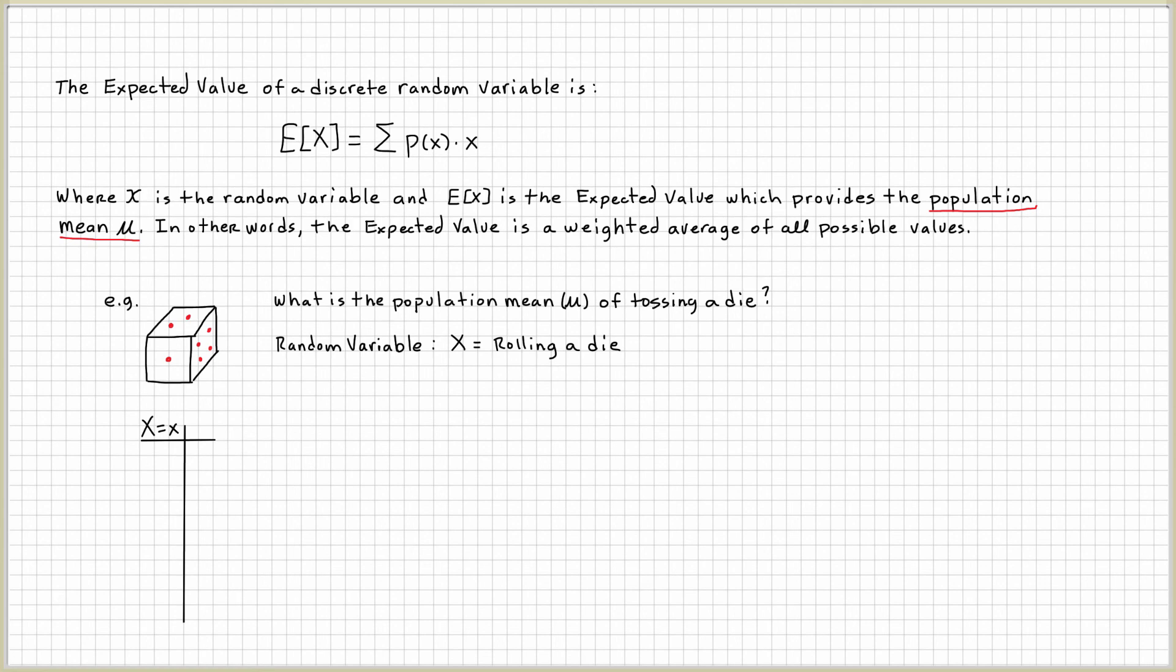Well, a die has six sides and they have dots on each side, right? One through six. So those are going to be my outcomes, one through six. In this probability distribution table, we also have the probability for each outcome.